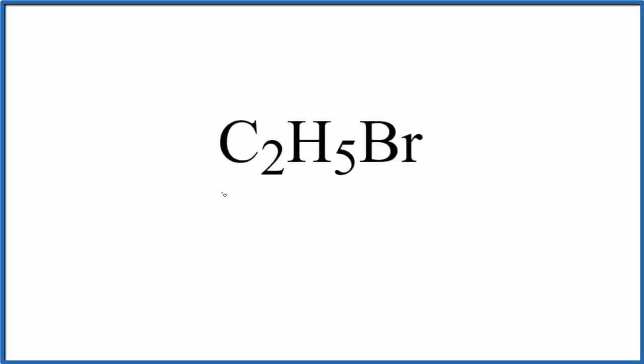Let's draw the Lewis structure here for C2H5Br. This is called bromoethane. So the first thing we should do is count our valence electrons up.